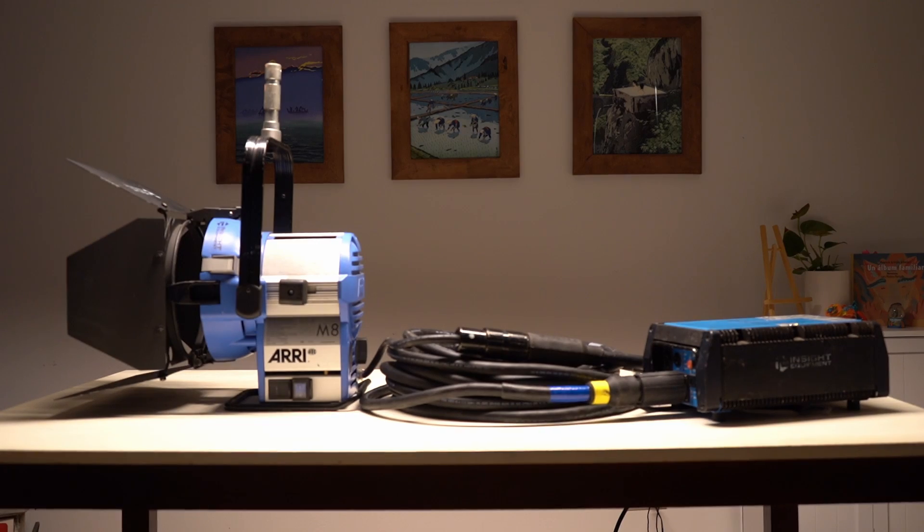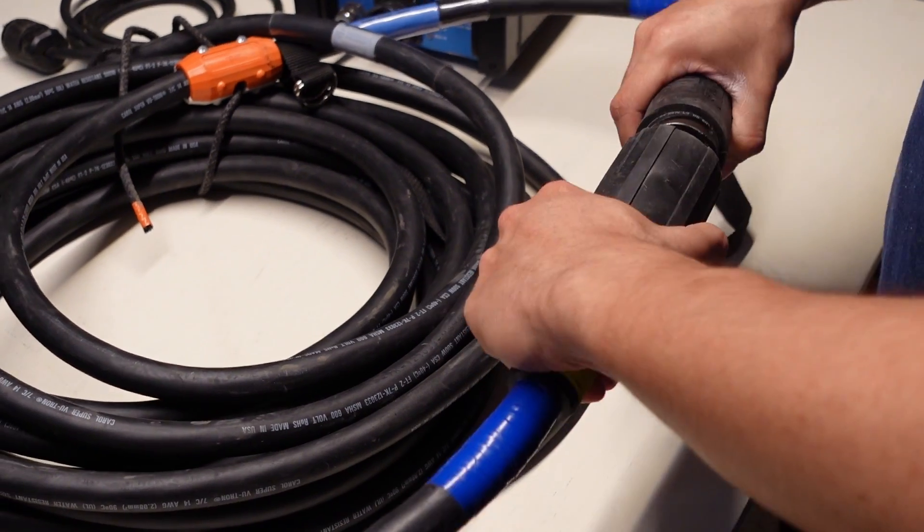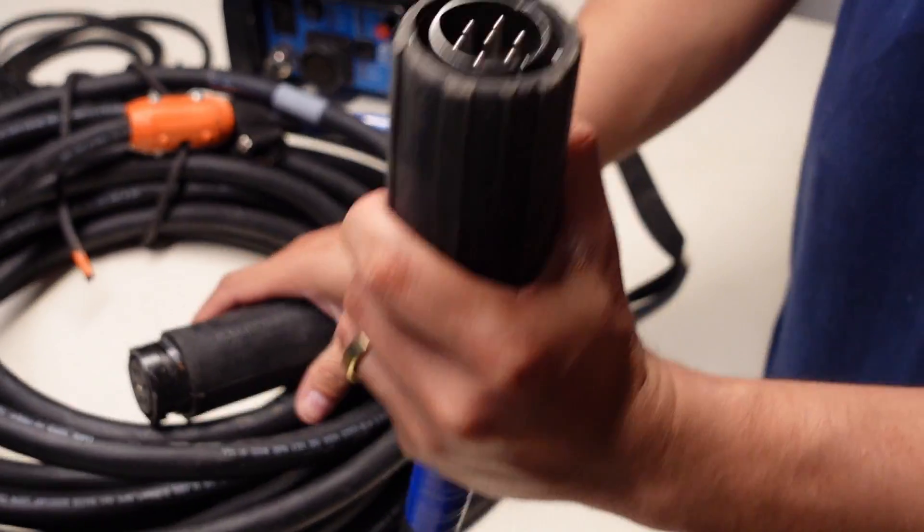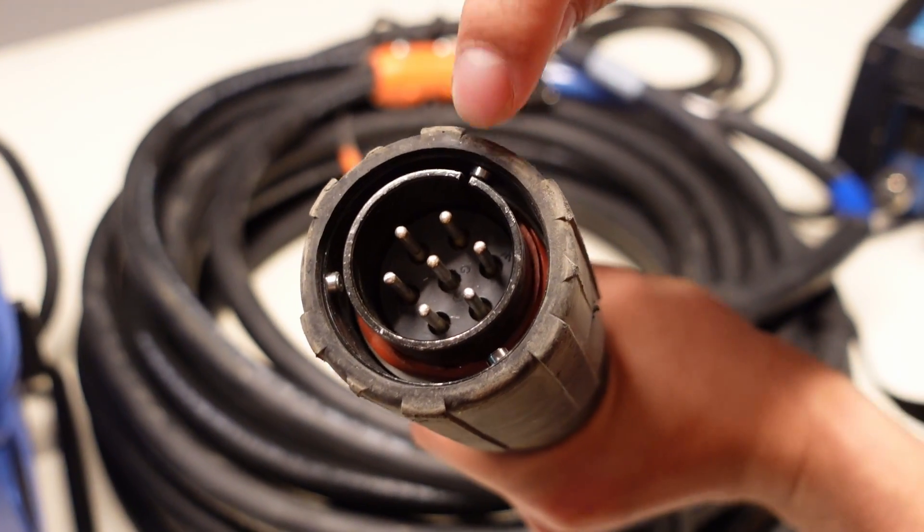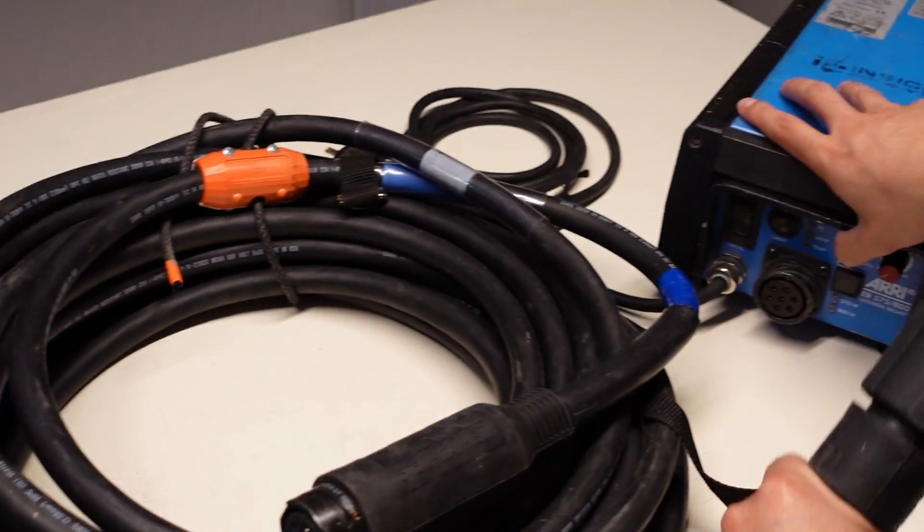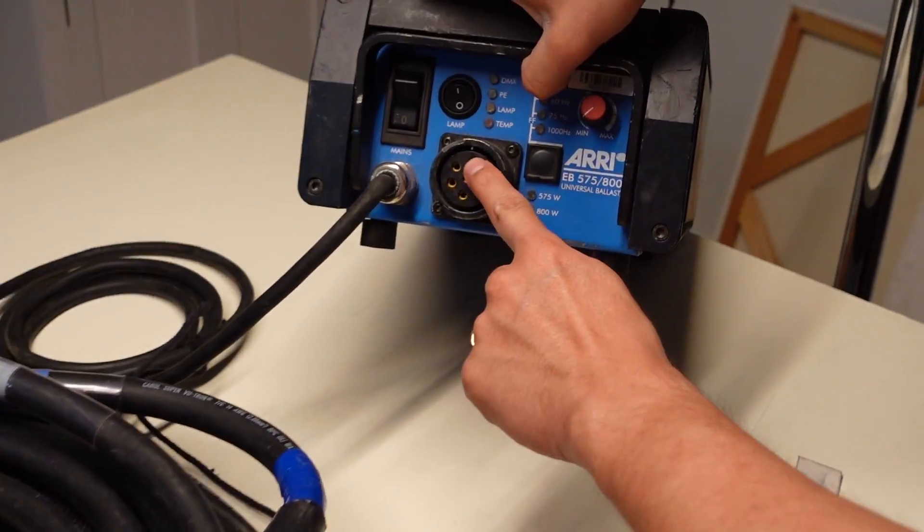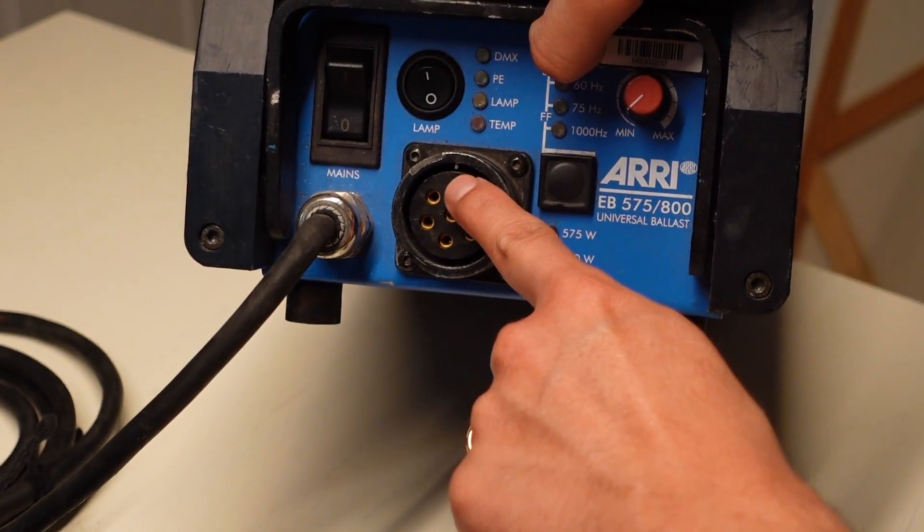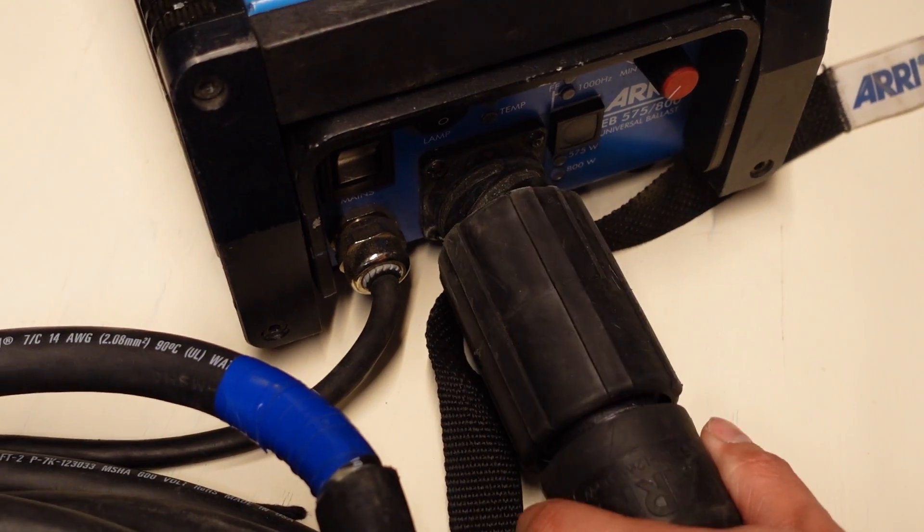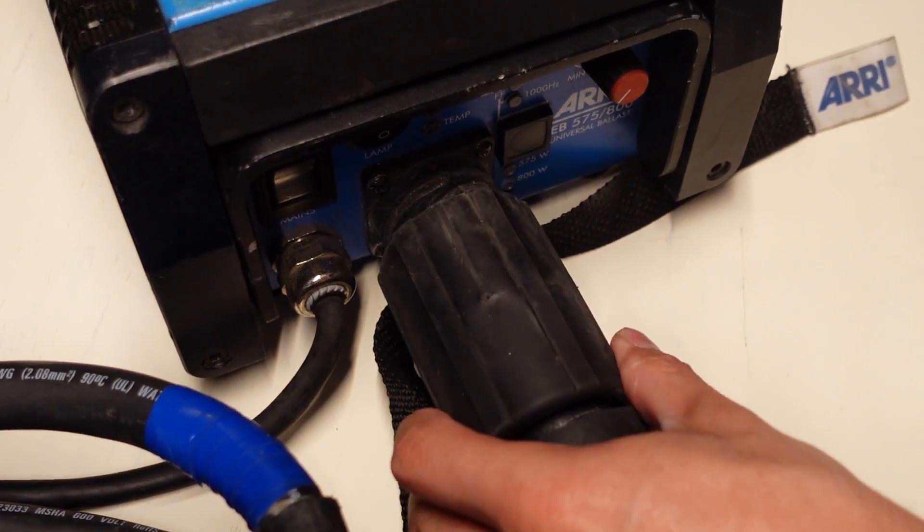Now we're going to turn on the system. As you can see, the connectors of the header cable are configured in a way to only match the ballast and the head that they're supposed to go into. A trick to connect it properly: you want to align the pins of the header cables on each side, push in and twist until you feel and hear the lock.